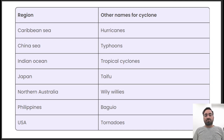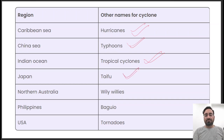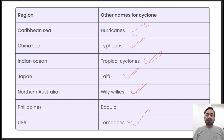These tropical cyclones have different names in different areas of the globe. For example, in the Caribbean Sea they are known as hurricanes, while in China they are known as typhoons, and in the Indian Ocean we call them tropical cyclones. In Japan they also call it typhoon, while in Australia they call it willy willies, and in the USA they are known as tornadoes. So these tropical cyclones have different names in different oceans of the globe.